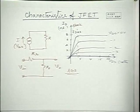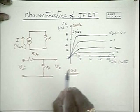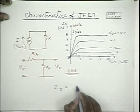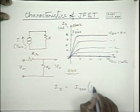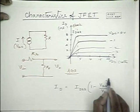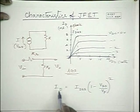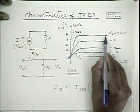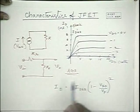Now, how does this drain current depend on VGS? It can be shown that the drain current depends on VGS according to this expression. It is IDSS into (1 minus VGS divided by VT) whole square. When VGS is 0, ID is equal to IDSS. So with this current as a parameter, this expression can be written in this form.